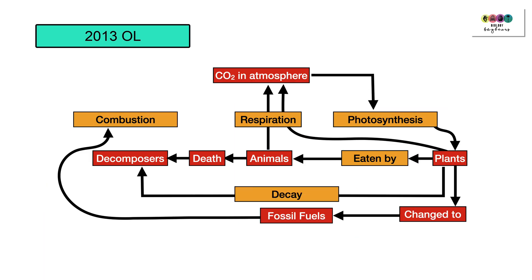For comparison, this is the 2013 Ordinary Level question on the carbon cycle. The labels in red were given on the paper and you had to complete the empty boxes — the yellow boxes in this case. You can see photosynthesis, respiration, combustion, and then 'decay' and 'eaten by' are the missing labels. So quite straightforward.